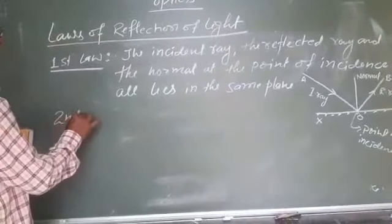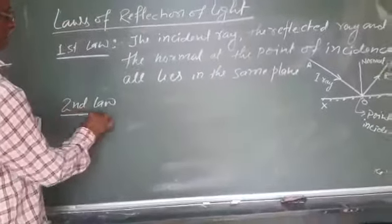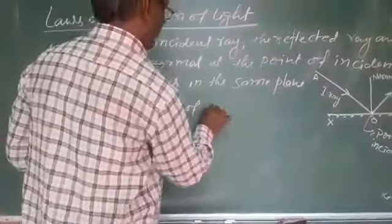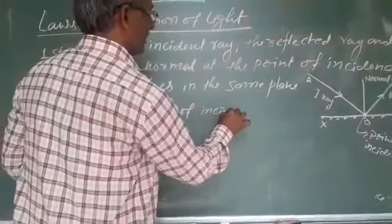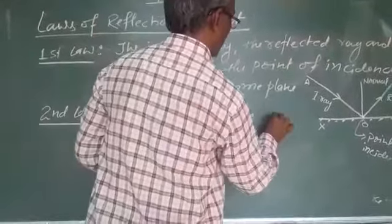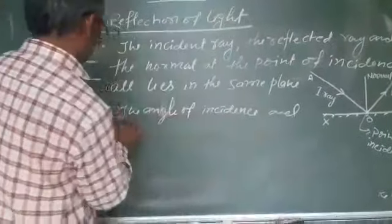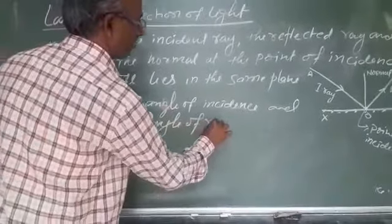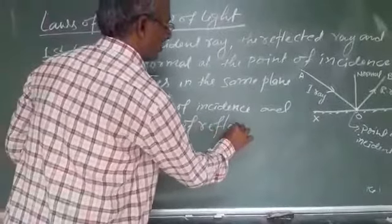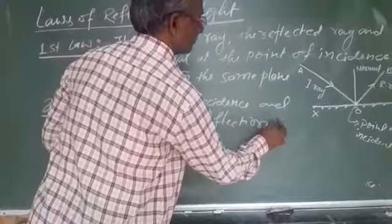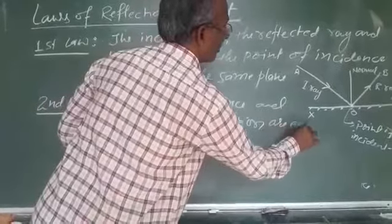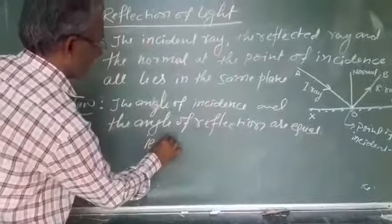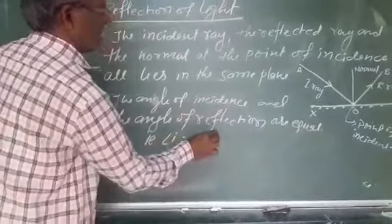Second law. The angle of incidence and the angle of reflection are equal. That is angle i equal angle r.